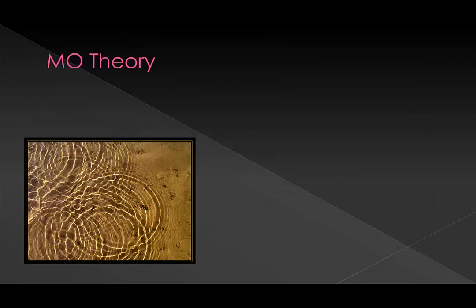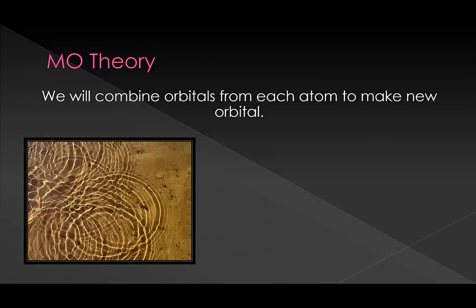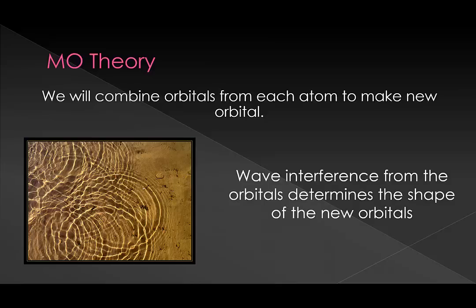So in MO theory, we'll be doing this with orbitals. Or at least this is what will be going on behind the scenes. We're going to combine an orbital from each atom and make a new orbital by doing what we call a linear combination of orbitals. We'll effectively be using wave interference from the orbitals to determine the shapes of the new orbitals.